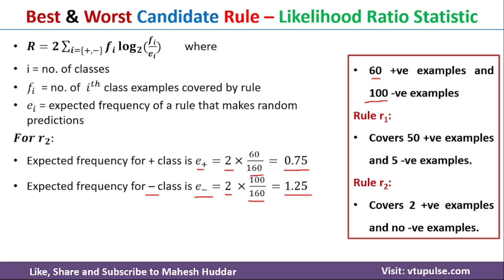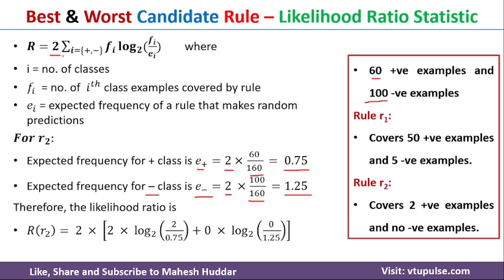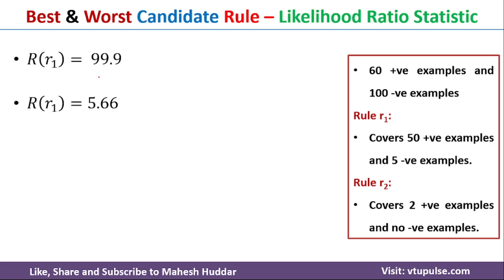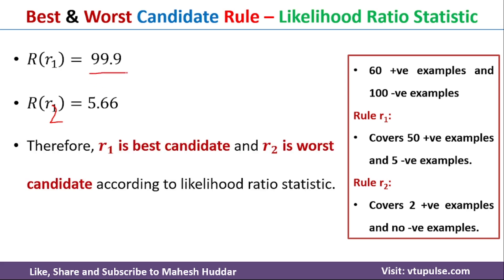Now we put these values into the equation: R(r2) = 2 × [2 × log(2 / 0.75) + 0 × log(0 / 1.25)]. Since f− is 0, that term equals 0, giving R(r2) equal to 5.66. Comparing R(r1) = 99.9 and R(r2) = 5.66, R(r1) is the maximum, so r1 is the best candidate and r2 is the worst candidate according to likelihood ratio statistic.